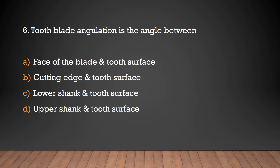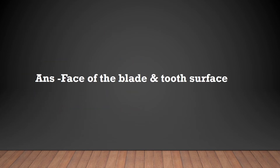Tooth-blade angulation is the angle between: face of the blade and tooth surface, cutting edge and tooth surface, lower shank and tooth surface, or upper shank and tooth surface? The answer is face of the blade and tooth surface.